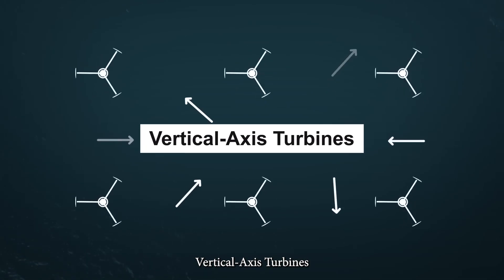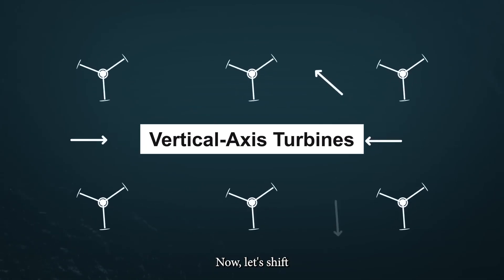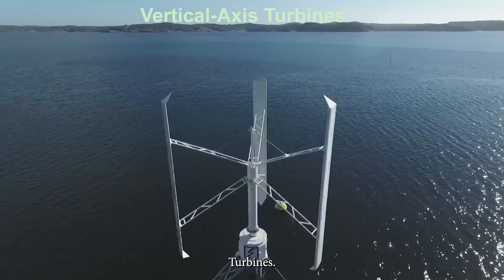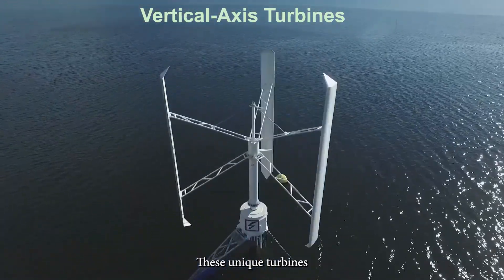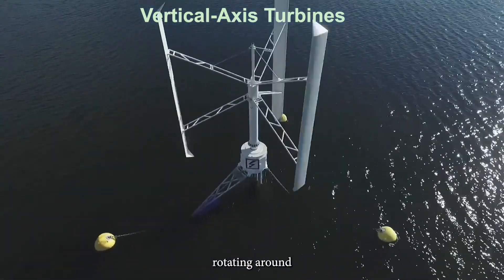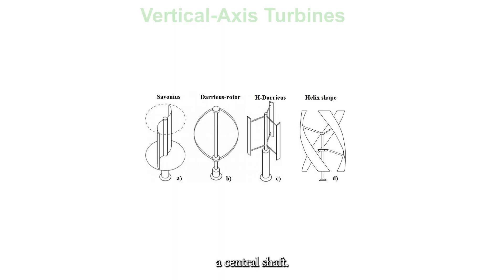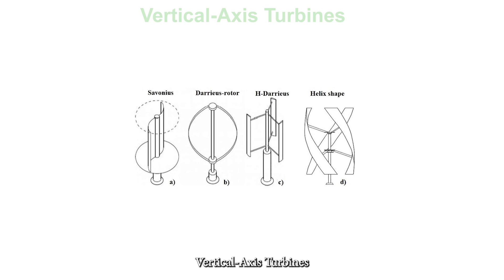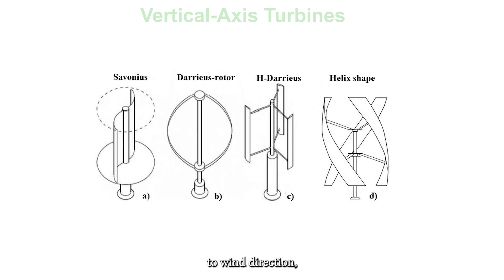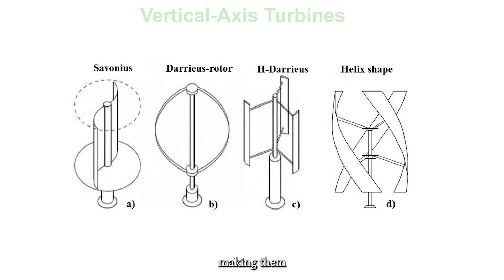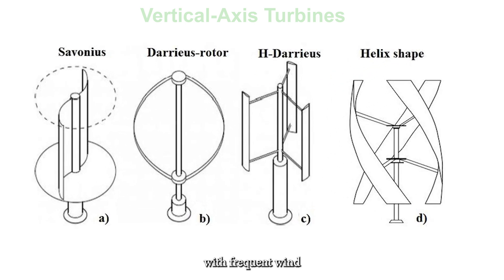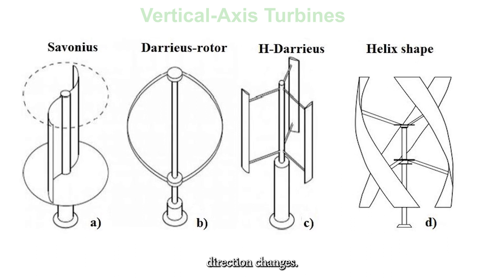Now, let's shift our focus to Vertical Axis Turbines. These unique turbines have their rotor blades arranged vertically, rotating around a central shaft. Vertical Axis Turbines are less sensitive to wind direction, making them perfect for regions with frequent wind direction changes.